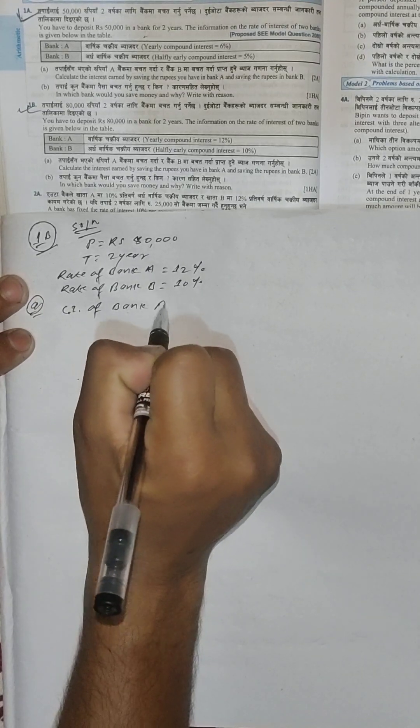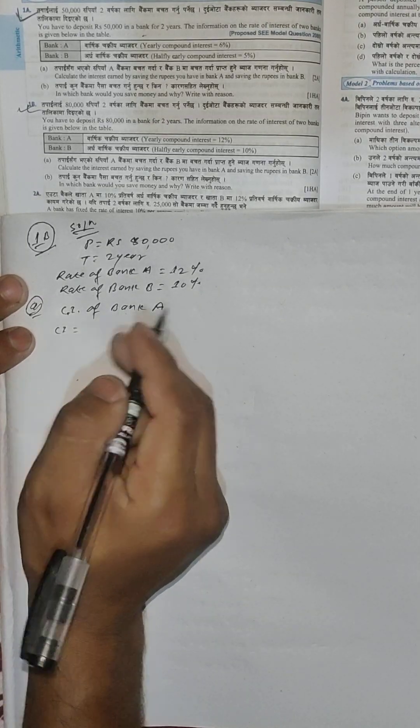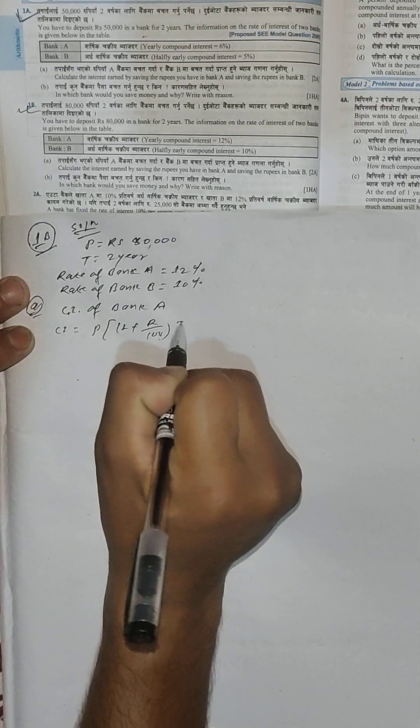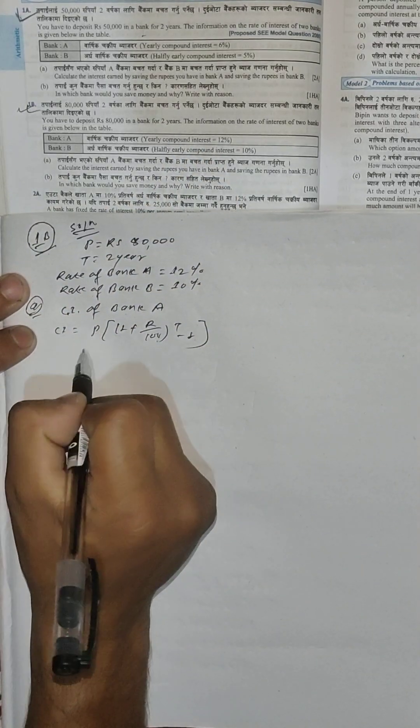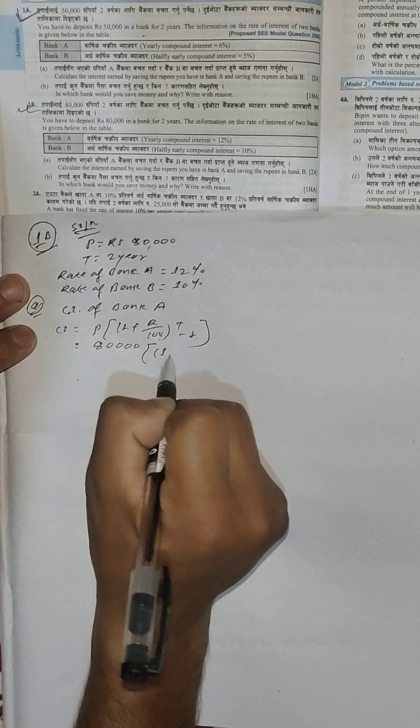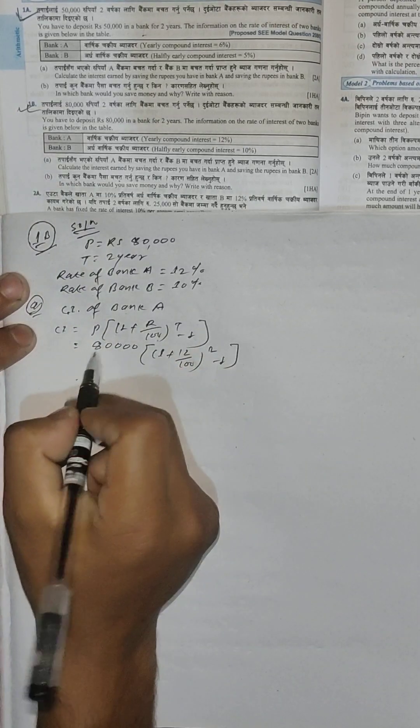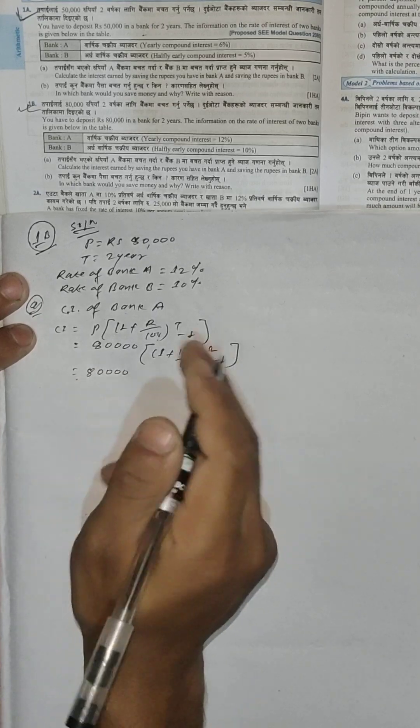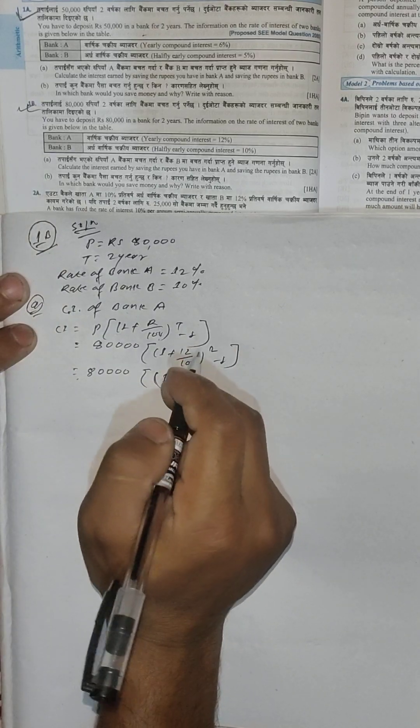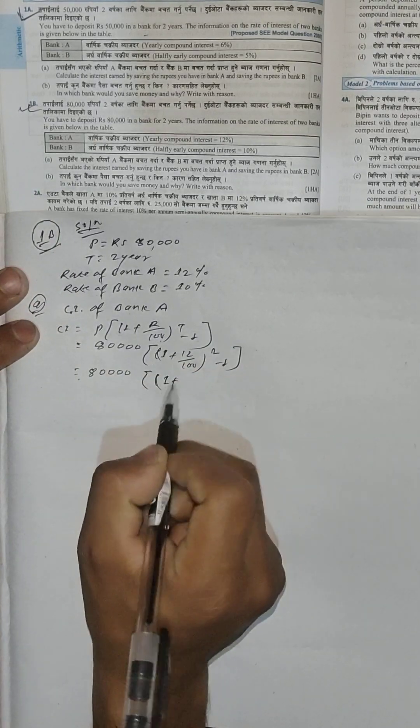For compound interest of Bank A, the formula is: P times (1 plus r/100) to the power t minus 1. Since it's yearly, we use the yearly formula. P value is 30,000, and (1 plus 12/100) to the power 2 minus 1.